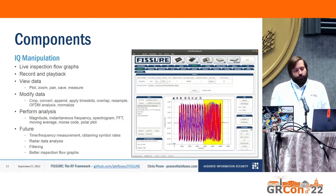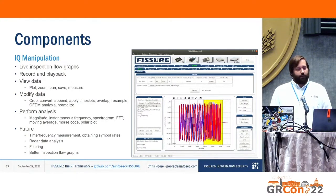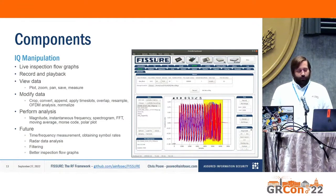For IQ manipulation, you have the ability to launch live inspection flow graphs with GUIs. You can look at things like waterfalls, time slots, or time sinks. There's a record and playback feature right in that section. You can view data — it's really useful for cropping data with just a couple of clicks. You can record something, crop it, convert it to different data types, and perform analysis with a couple of clicks. In the future, I want more measurement, radar data analysis, filtering capabilities, and better inspection flow graphs.